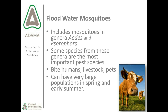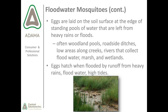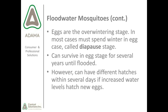Floodwater mosquitoes include genera Aedes and Ochlerotatus. Some species are the most important pest species, biting humans, livestock, and pets. Large populations can occur in spring and early summer. Eggs are laid on soil at the edge of standing pools from heavy rains or floods — in woodland pools, roadside ditches, low areas along creeks, rivers, marshes, and wetlands. Eggs hatch when flooded by runoff from heavy rains, floodwater, or high tides. Eggs are the overwintering stage; they can survive in diapause for several years until flooded.